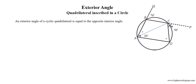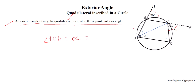Exterior angle of a quadrilateral inscribed in a circle: an exterior angle of a cyclic quadrilateral is equal to the opposite interior angle. For example, for cyclic quadrilateral ABCD, the exterior angle PCD equals alpha, which is equal to the opposite interior angle BAD, which equals Y plus 20 degrees.